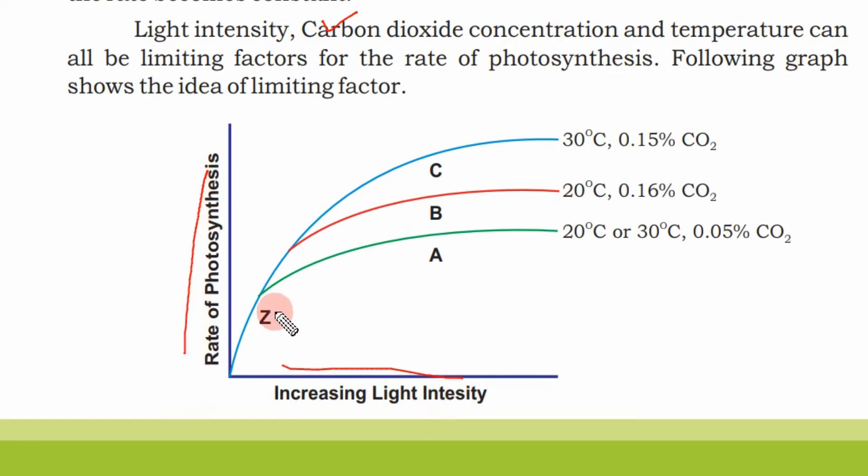Here we can see A, B, and C. These three curves show different conditions: 20°C temperature here, and here is 30°C. Then if we look at carbon dioxide, here is 0.15%, 0.16%, and here is 30°C temperature with 0.05% carbon dioxide. Due to these factors, you can see the rate of photosynthesis varies.